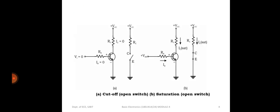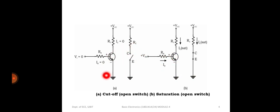Let us study how BJT works as a switch. Both PNP and NPN transistors can act as a switch. When BJT is used as an electronic switch, it is operated alternatively in cutoff and saturation. Cutoff is where no current flows — it acts as an open switch. Saturation is where current flows through the device — it acts as a closed switch.